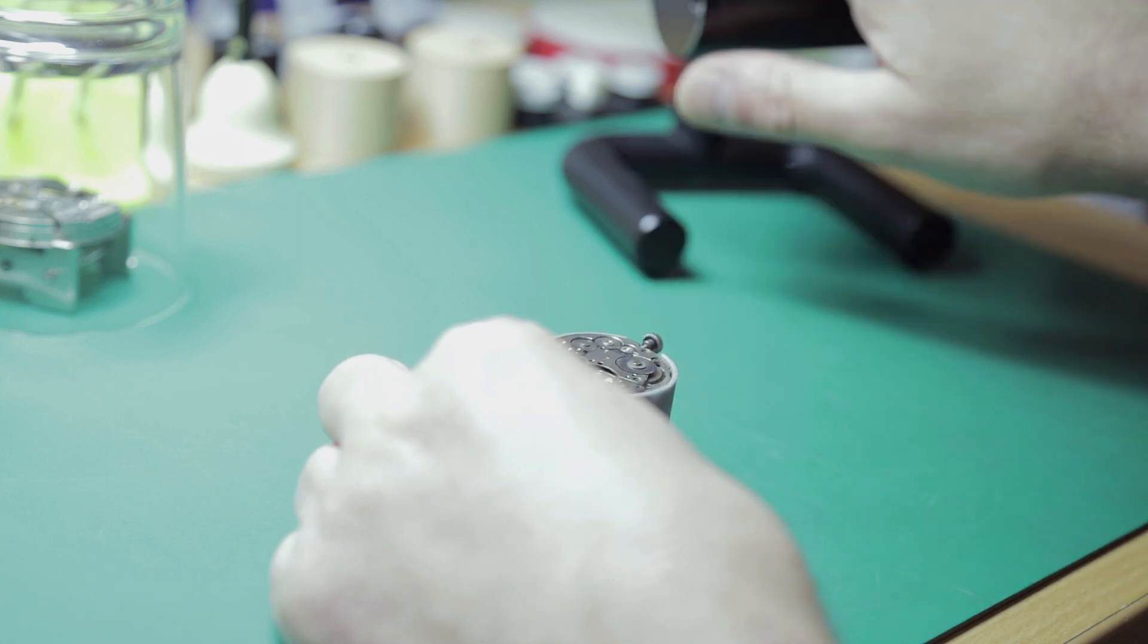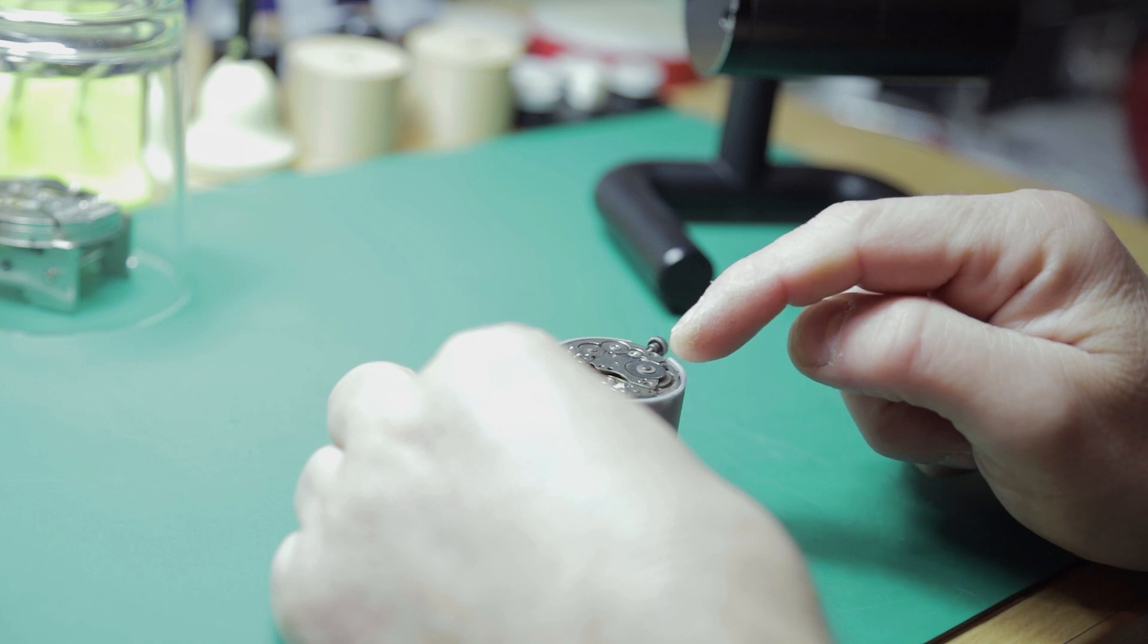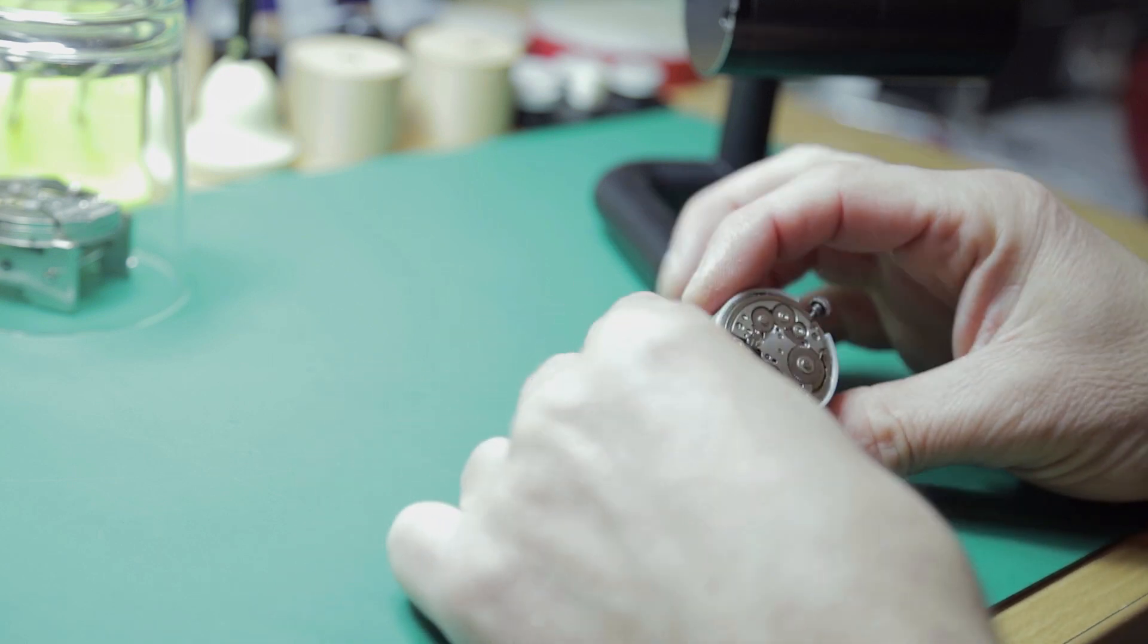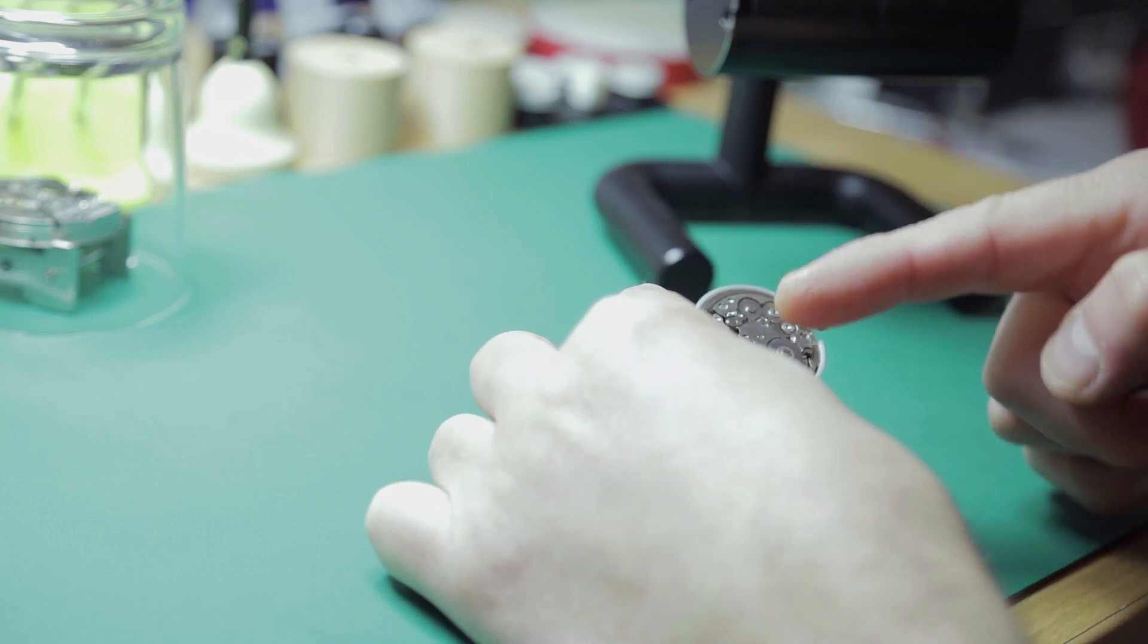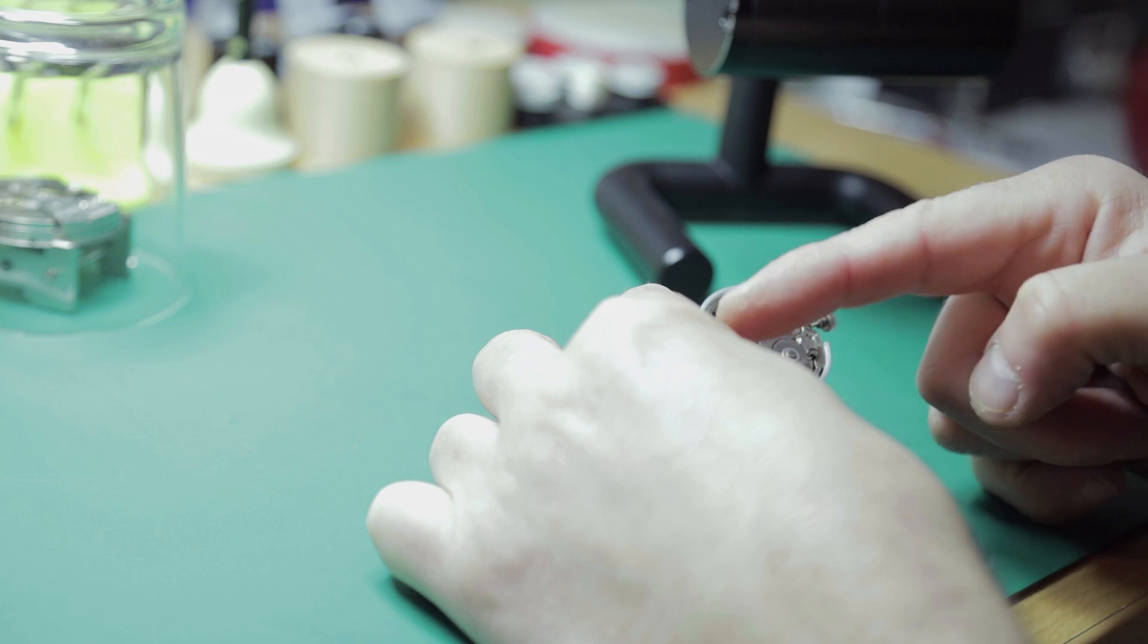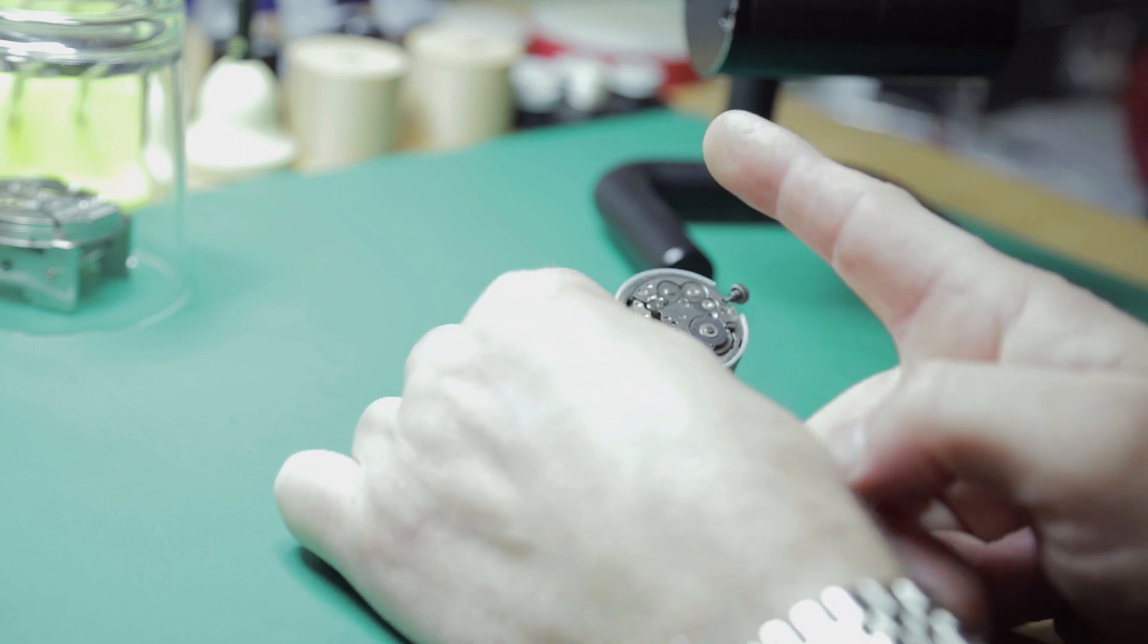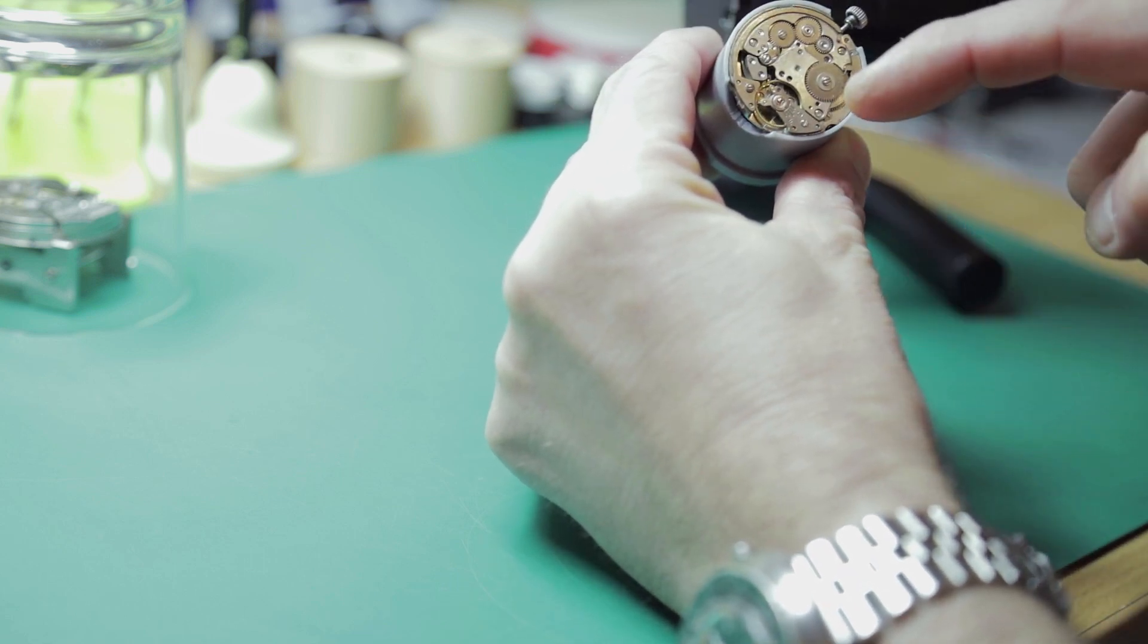but it's perfect for finding out the actual lift angle. So what we're going to do is mount this into the time grapher stand, and I'm going to wind this via the mainspring barrel until we get an amplitude of approximately 180 degrees, and that is to say that it needs to swing 180 degrees in both directions.